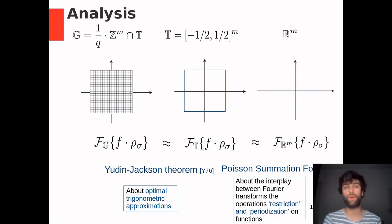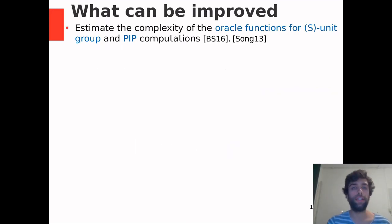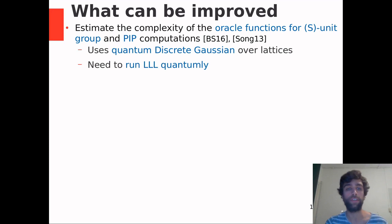We will now go to five challenges in this area. The first challenge is to estimate the complexity of Oracle functions for S-Unit groups and PIP computations as initiated by BIOS and Strong. This is one of the reductions in a few slides back that influenced cryptography. And it is really important to quantify those reductions. The two main ingredients for those Oracle functions are that they use quantum discrete Gaussians over lattices and that they need to run LLL quantumly.